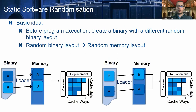In this presentation, we focus on static software randomization. The basic idea behind this method is that before program execution, we create a binary with a different random binary layout. As you can see on the bottom of this slide, the binary layout directly affects the memory layout because the binary is loaded into memory before program execution. Also, the exact position in memory affects how things are mapped inside the cache, and this creates different conflicts between the different elements of the program. Different conflicts result in different amounts of cache misses, which translate to different execution times. So if we modify the binary, we modify the memory layout, and subsequently also the cache map and the execution time.